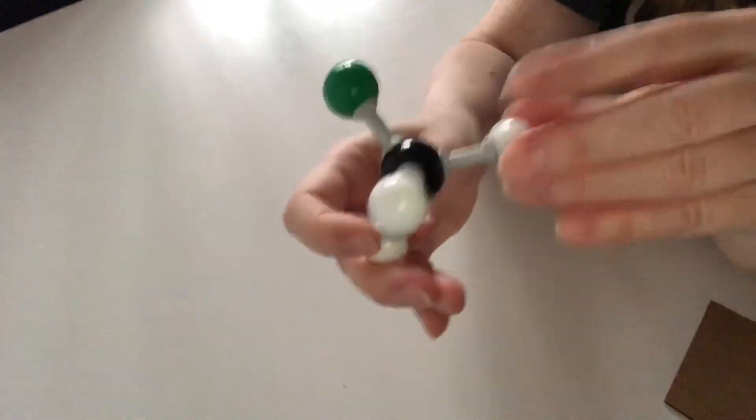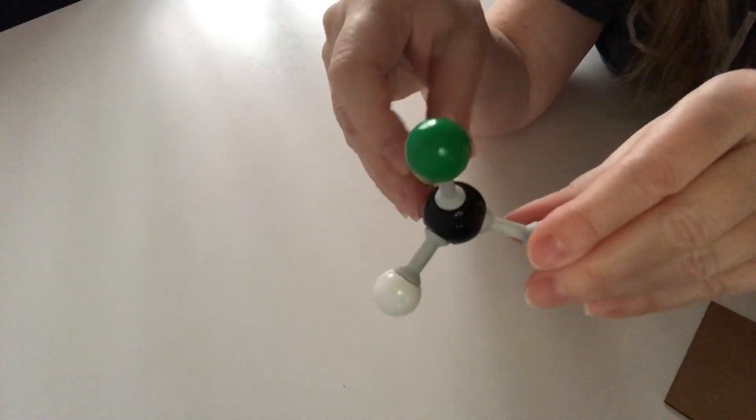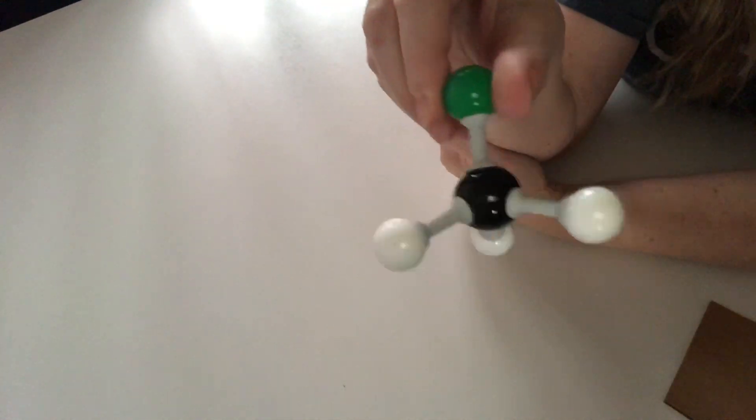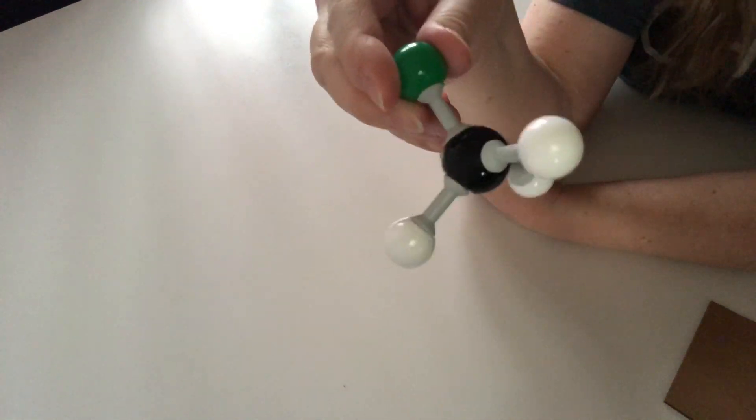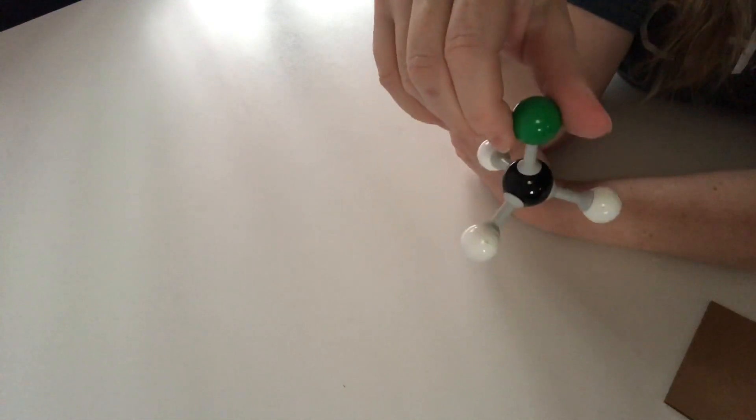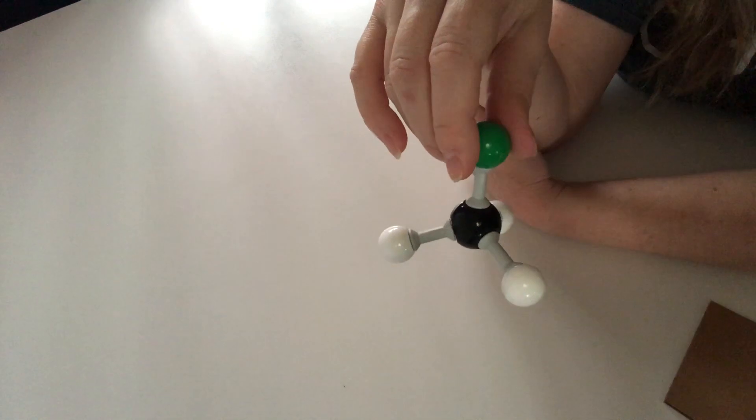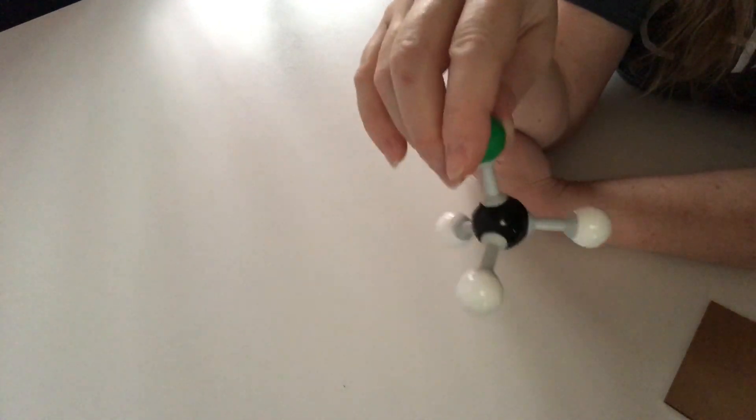So it has three S3 improper axes of rotation. Those are probably the hardest to spot. So this thing has E, everything has E, it's got C3, it has three sigma Vs, no sigma H, no I, but it has three S3s.